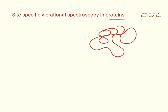Proteins are long stringy molecules that either fold over onto each other or don't fold over onto each other, and then have very specific jobs that they have evolved to do. Here's a folded protein and here is an unfolded protein. As we learn more and more about proteins, we realize that some of the most important things that they do are to interact with other proteins or other things inside cells.